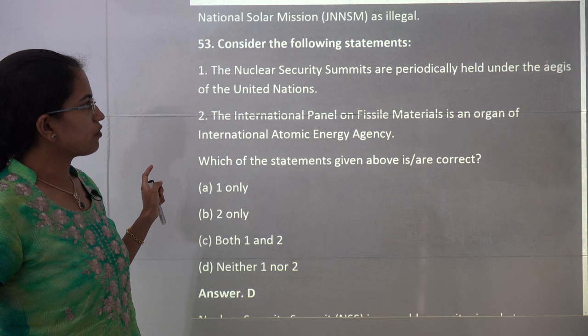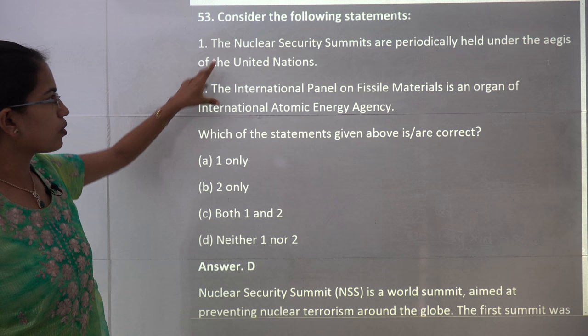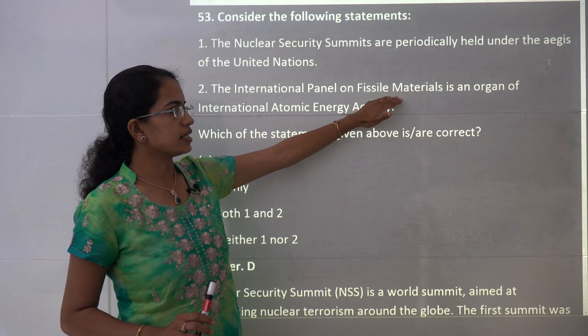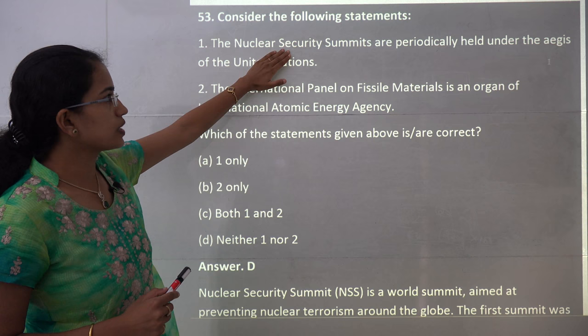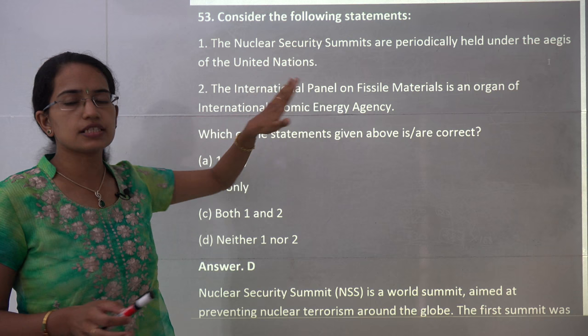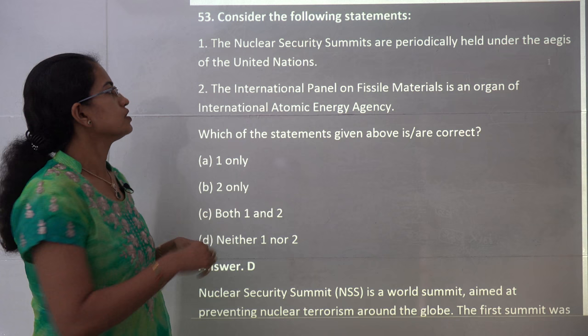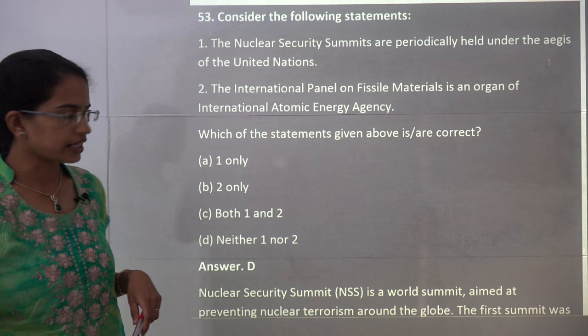The next question asks which statements are correct. Both statements given are incorrect. The International Panel on Fissile Materials is an independent body whose co-chairmen are professors from Princeton University and Jawaharlal Nehru University, India. The Nuclear Security Summit is not held under the auspices of the United Nations — the UN is merely one of its members. So both 1 and 2 are incorrect, and neither one nor two is the correct answer.